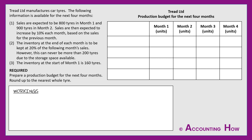A production budget forms part of the bigger picture of the whole budgeting process. Specifically, it works out how many car tyres have to be made each month, which supports the production department. This information also feeds into other budgets such as the purchases budget, because once we know how many tyres to make each month, we can work out how much material we need to purchase.